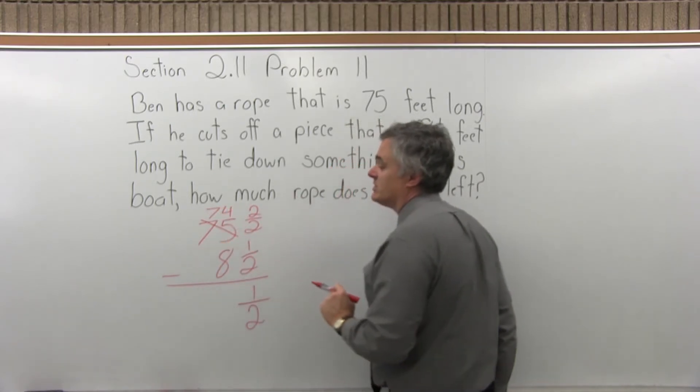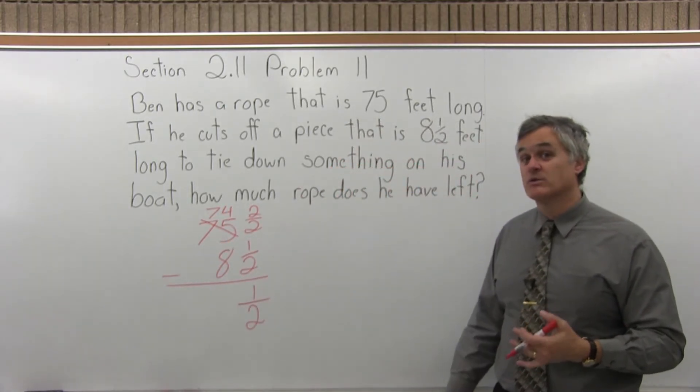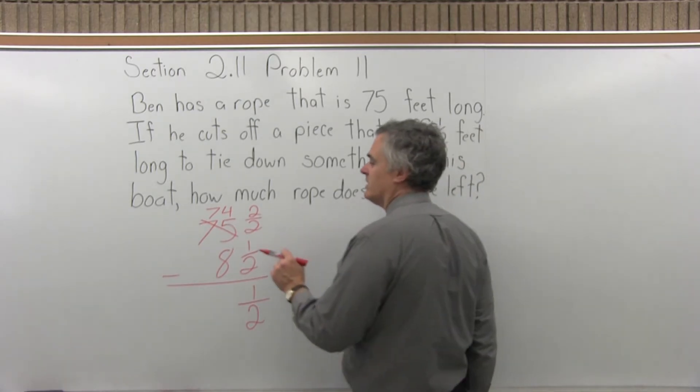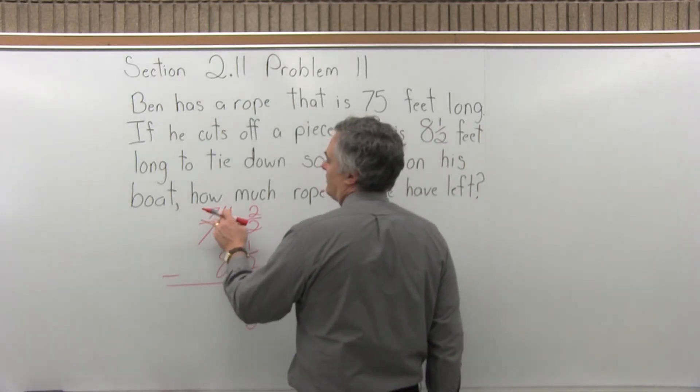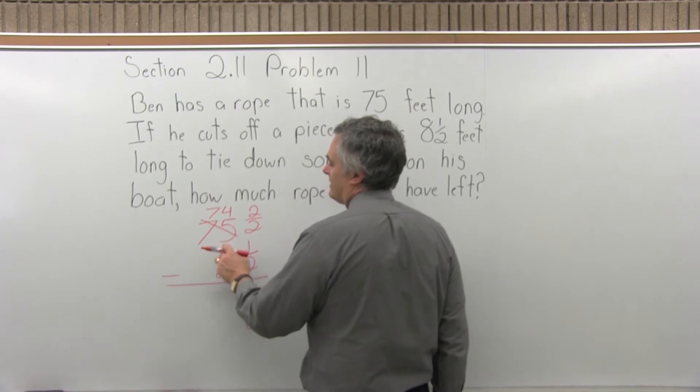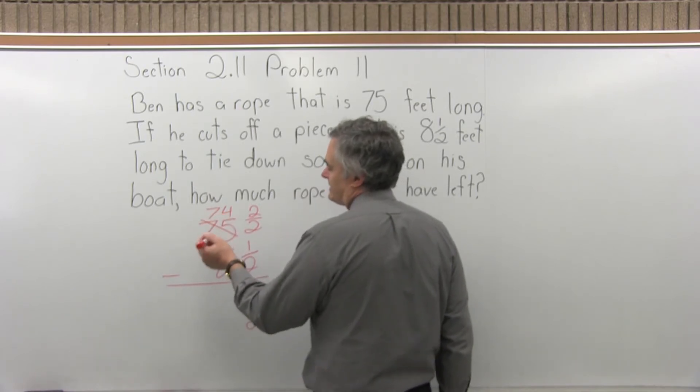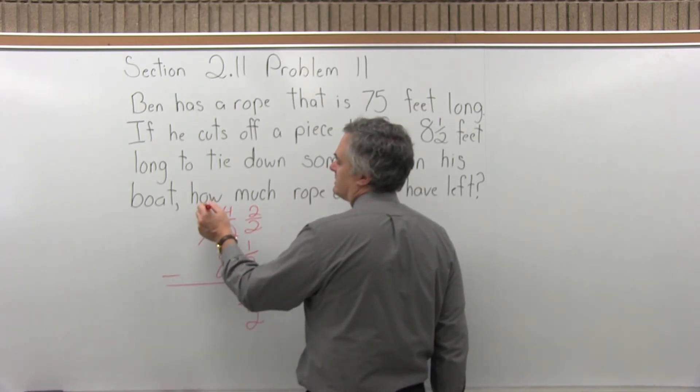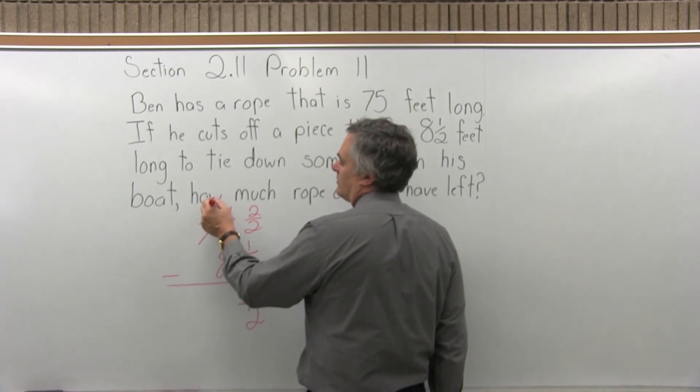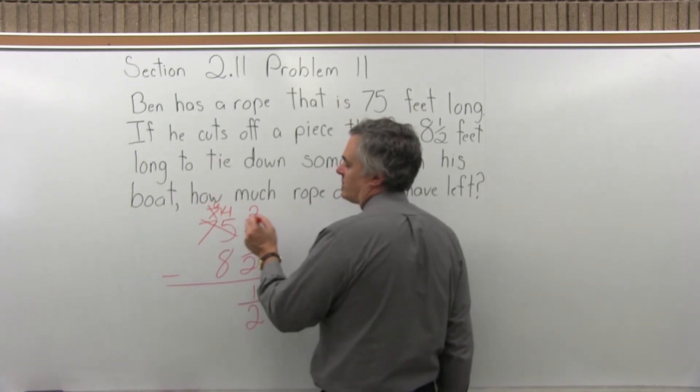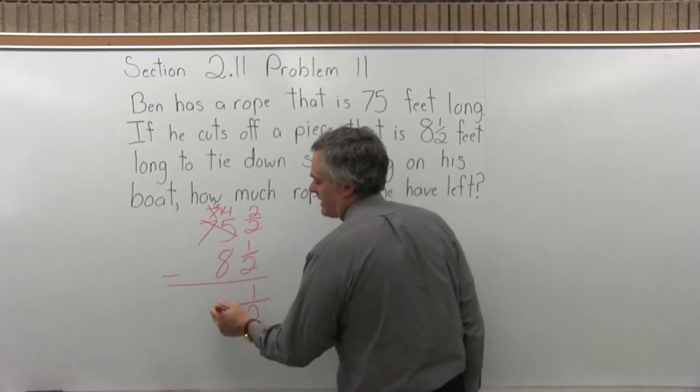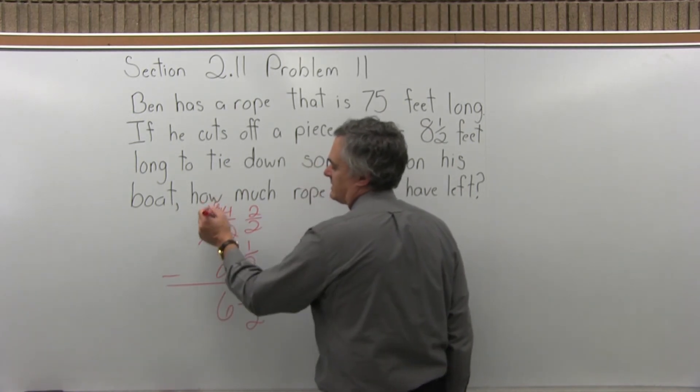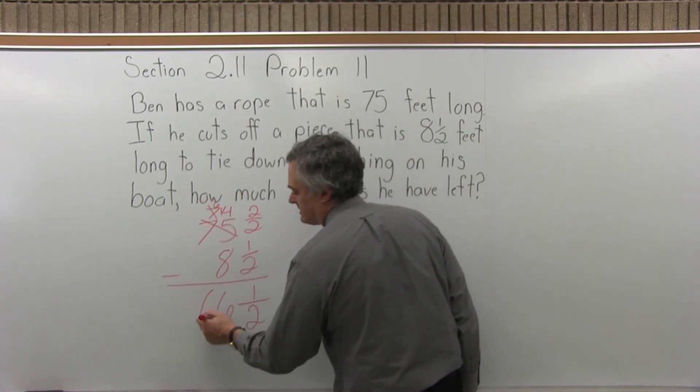I have to subtract the whole numbers. Don't forget, it's not 75 anymore. I reduced it down to 74 when I borrowed, so 74 minus 8. Well, I can see it's 66, but if you don't see that, what you do is borrow from the 7, make it a 6, make that 4 into a 14. 14 minus 8 is 6, then 6 minus nothing is 6.